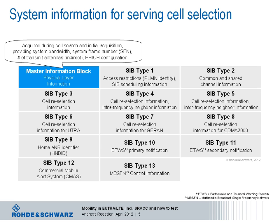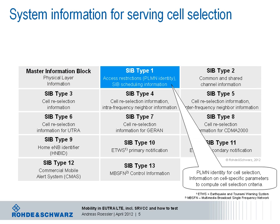The MIB is acquired during cell search and provides information on system bandwidth, the system frame number, and indirectly on the number of used transmission antennas. System information block type 1 has fixed scheduling and is transmitted every 80 milliseconds using the shared channel principle. The important information here for cell selection is that it provides the relevant input parameters that impact the so-called cell selection criteria.